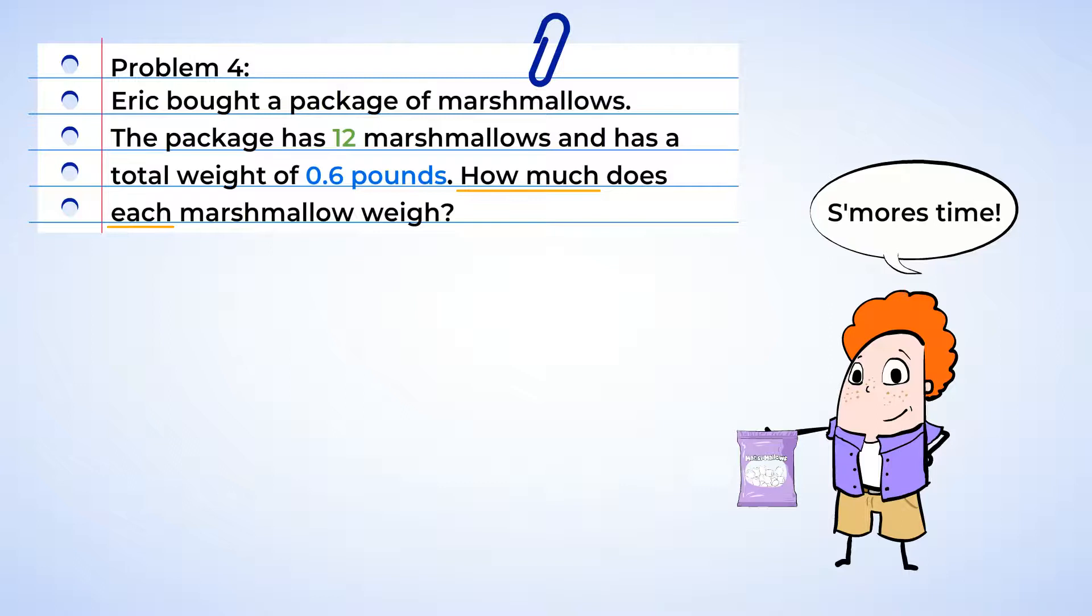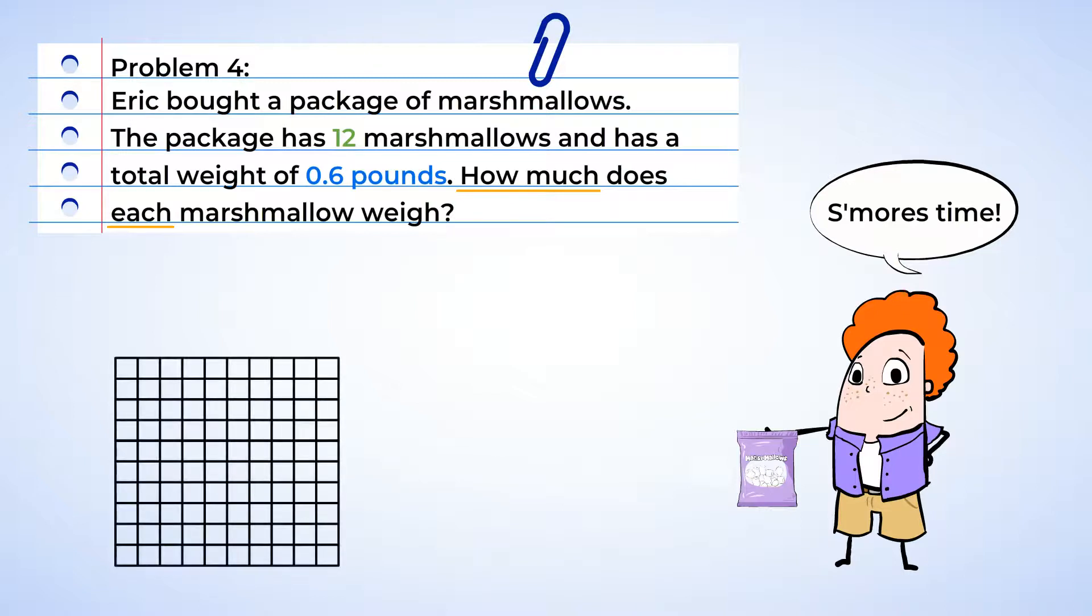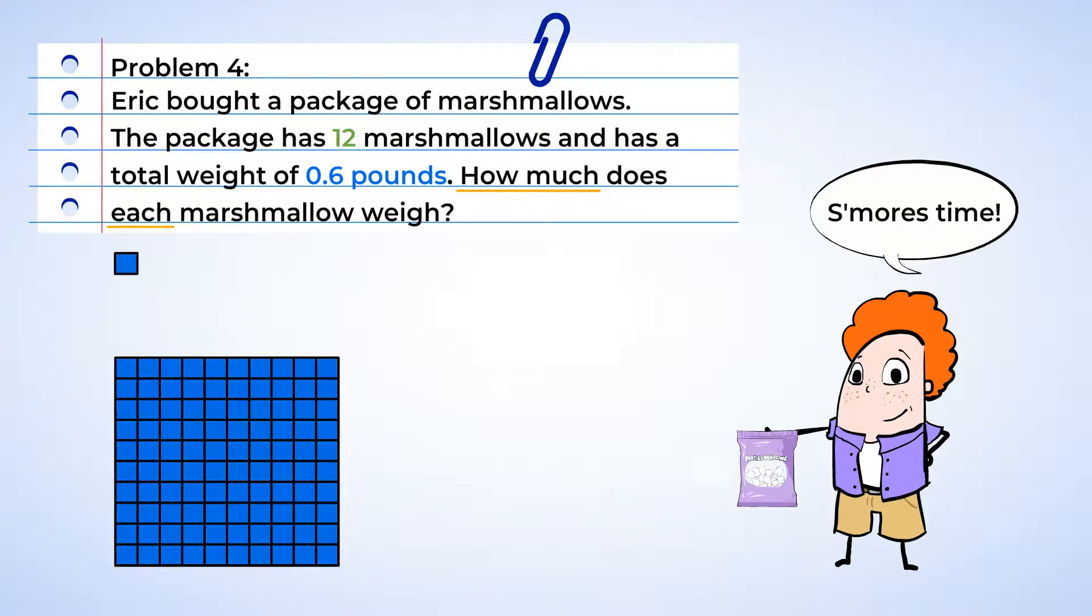This looks like another division problem. But this time, we have the total weight of six-tenths of a pound that we need to divide into twelve groups, since there are twelve marshmallows. Let's represent this using an array model. In this ten-by-ten array, the rows and columns intersect, creating one hundred small squares. Each square represents one hundredth of the array.